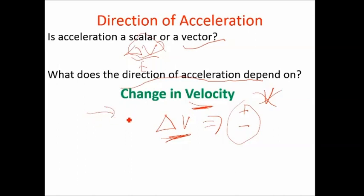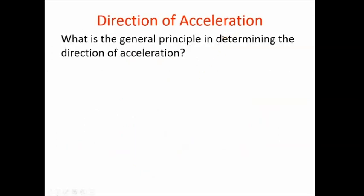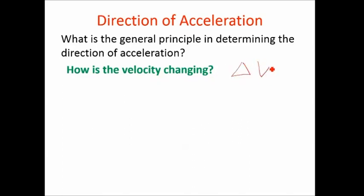So you could be going forward and speeding up — that's a delta V, a change in velocity that is positive. Or you could be going forward and slowing down, and that would have a delta V of negative. Going forward and slowing down means delta V is negative. The general principle is to look at how the velocity is changing: find that velocity change, look at the final velocity, subtract the initial velocity, and if that's positive, acceleration is positive; if that value is negative, acceleration is negative.